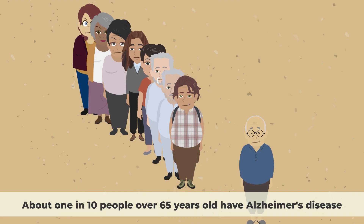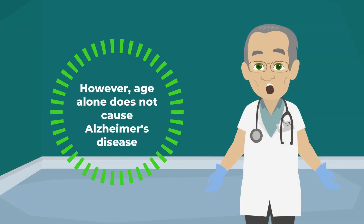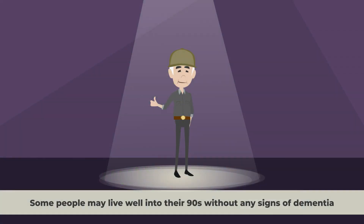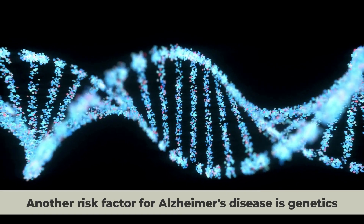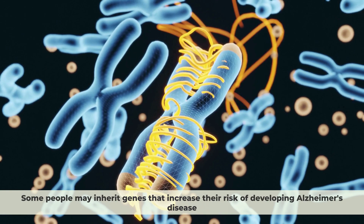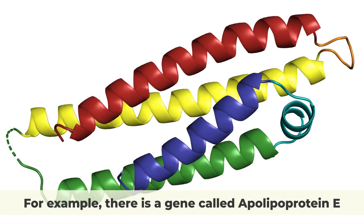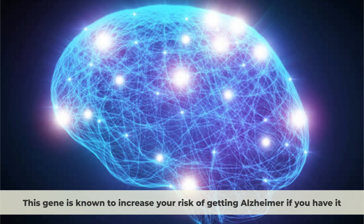About 1 in 10 people over 65 years old have Alzheimer's disease. However, age alone does not cause Alzheimer's disease, and some people may live well into their 90s without any signs of dementia. Another risk factor is genetics — some people may inherit genes that increase their risk. For example, there is a gene called Apolipoprotein E, which is known to increase your risk of getting Alzheimer's if you have it.